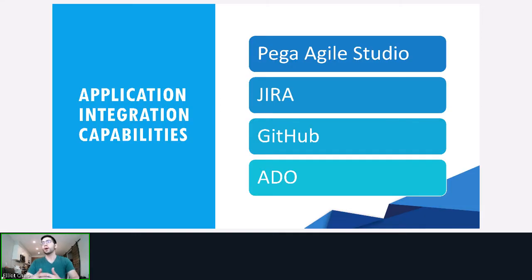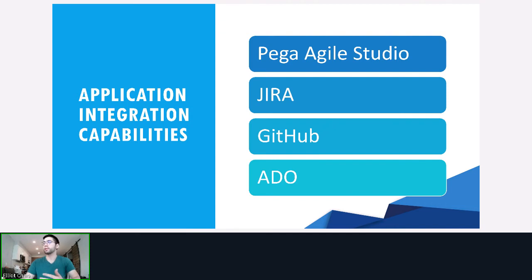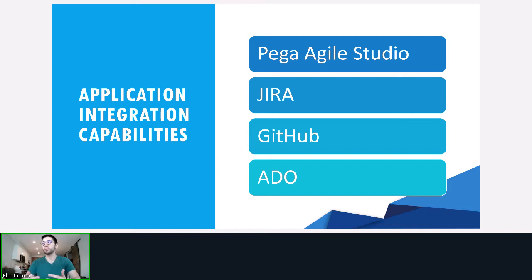Currently, our Rapid Release Dashboard is integrated with Pega Agile Studio. We have future goals to integrate with third-party DevOps management systems like Jira, GitHub, and Azure DevOps.